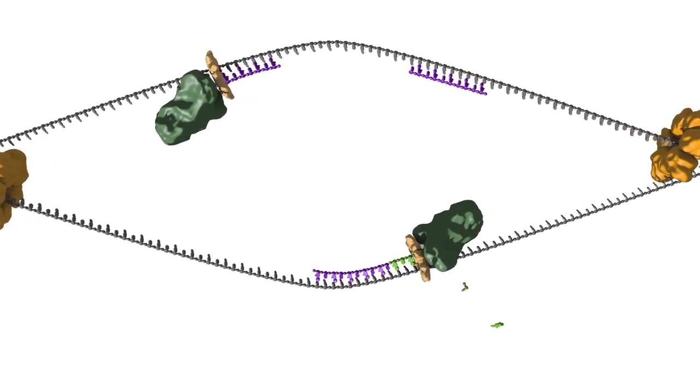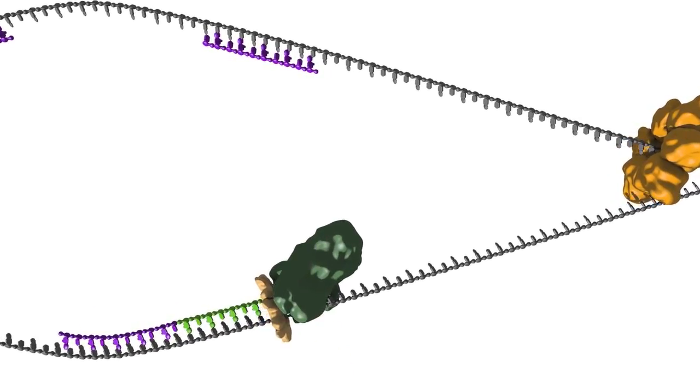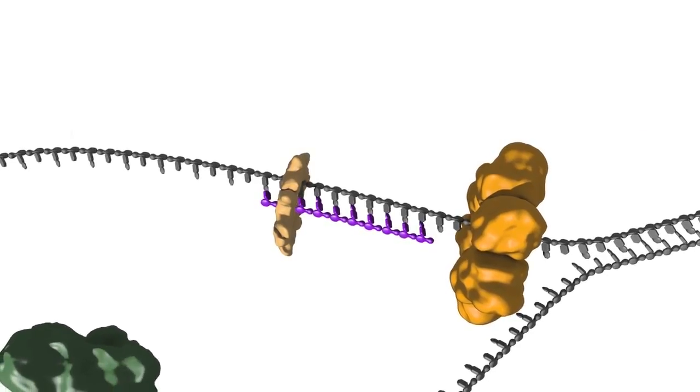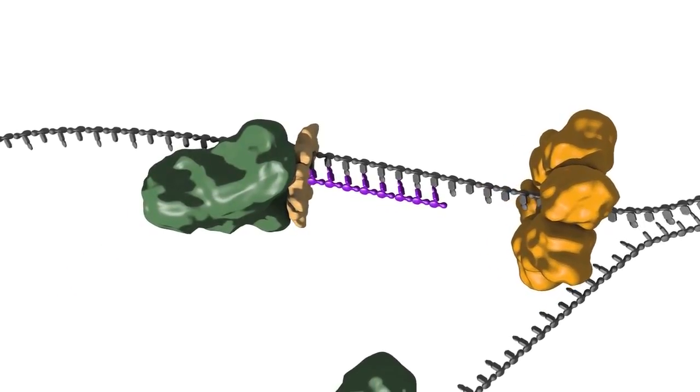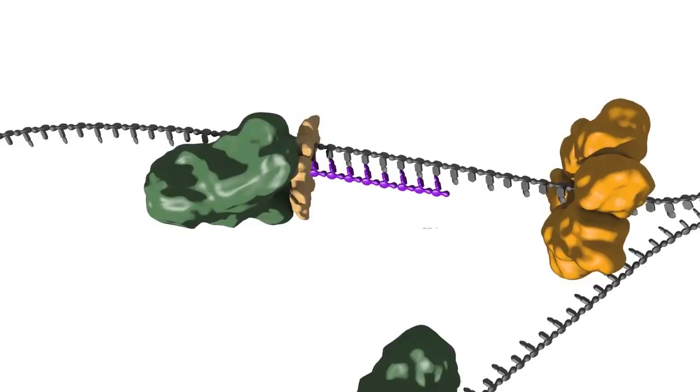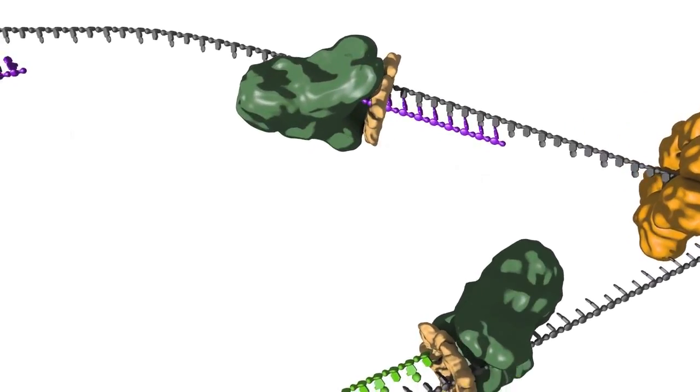Let's focus on just the right hand fork for the moment, as the processes at both forks are identical. Polymerases are loaded onto both the top and the bottom DNA strands at the fork. Because polymerases only synthesize DNA in the five prime to three prime direction, the two strands must be copied in opposite directions.